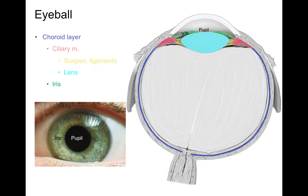The second layer is the choroid layer, shown in blue in the illustration. It has a lot of blood vessels, and anteriorly a portion of it consists of smooth muscles called the ciliary muscles. That circular muscle is attached to the lens by the suspensory ligaments in yellow. Contraction and relaxation of the ciliary muscles changes the tension of the suspensory ligaments, which changes the shape of the lens. The iris is the most anterior portion of this choroid layer, comprised of pupillary sphincter and dilator muscles that change the diameter of the pupil to allow more or less light in.